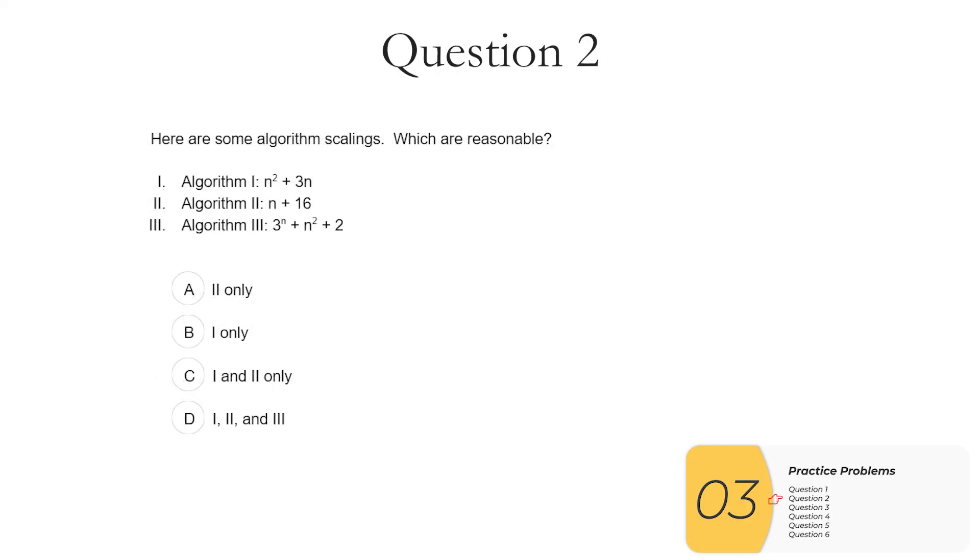Question two: here's some algorithm scalings, which is reasonable. So this is the kind of question that AP board is going to give you where they give you the scalings, but don't make you have to figure it out. So one, this has an n squared in it. So it's a polynomial, so it's reasonable. We only care about the highest power. If we have an n squared, we don't care about the 3n anymore. Two, n plus 16. This is linear, so that's reasonable. Three, 3 to the n plus n squared plus 2. So the worst term here is the exponential, 3 to the n. And AP has told us that that is not reasonable. So our answer here is C, 1 and 2.